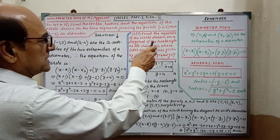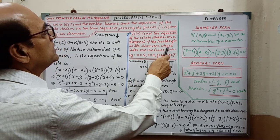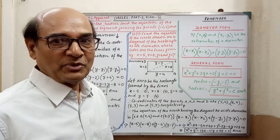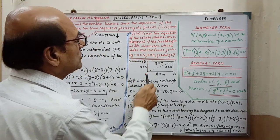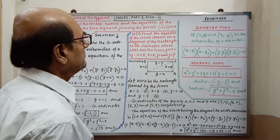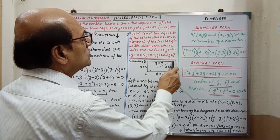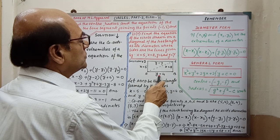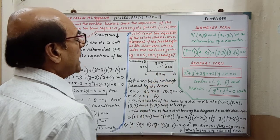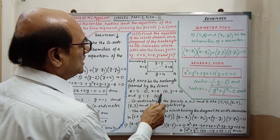Next sum: Find the equation of the circle drawn on the diagonal of the rectangle as its diameter, whose sides are lines given by x equals 2, x equals 8, y equals 4, and y equals 7. Here you have to understand the problem clearly. The diagonal of the rectangle is given. The four sides of the rectangle are x equals 2, x equals 8, y equals 4, and y equals 7.